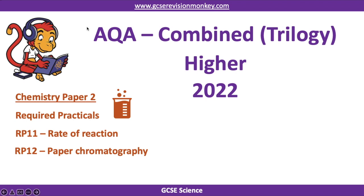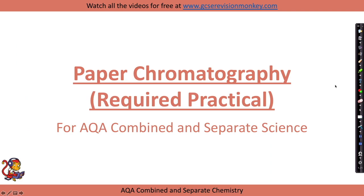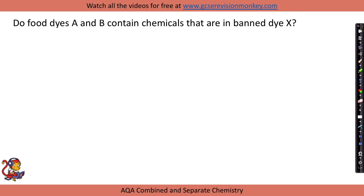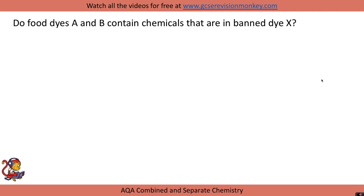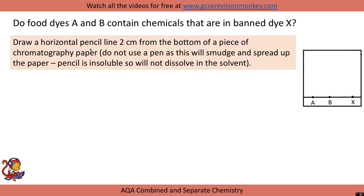Paper chromatography required practical: we use paper chromatography to separate coloured substances. In this practical you may be asked a question like: do food dyes A and B contain chemicals that are in banned dye X? We're going to separate three dyes — A, B, and X — and compare the patterns at the end. In your exam they might talk about inks or another coloured substance, but the process is exactly the same.